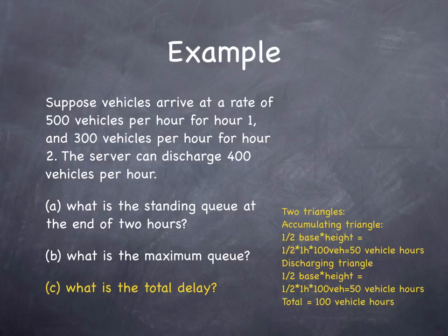What is the total delay? There are two triangles. We can break it into two triangles, an accumulating triangle, which we can measure the area of as one half base times the height, or one half times one hour times 100 vehicles, which gives us 50 vehicle hours.